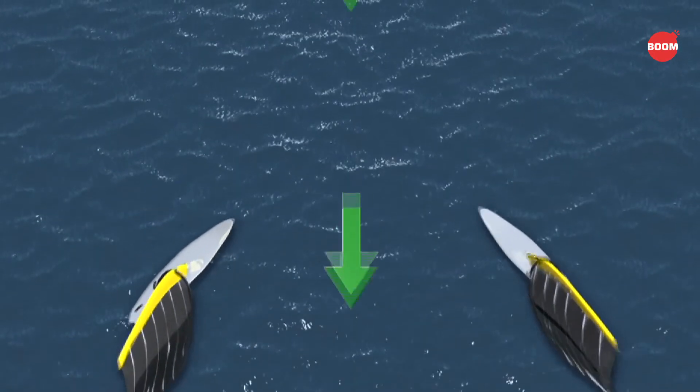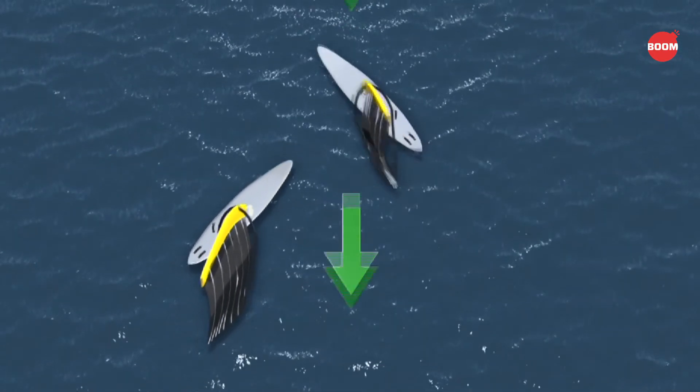When two sailboats approach each other on different tacks, the boat on the starboard tack has the right of way.